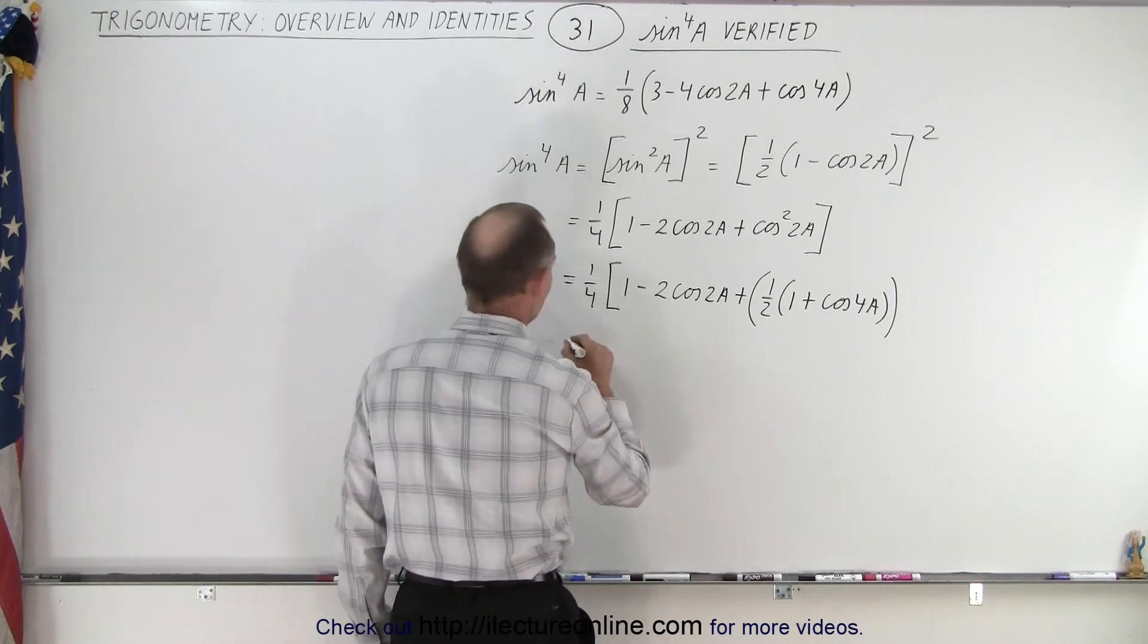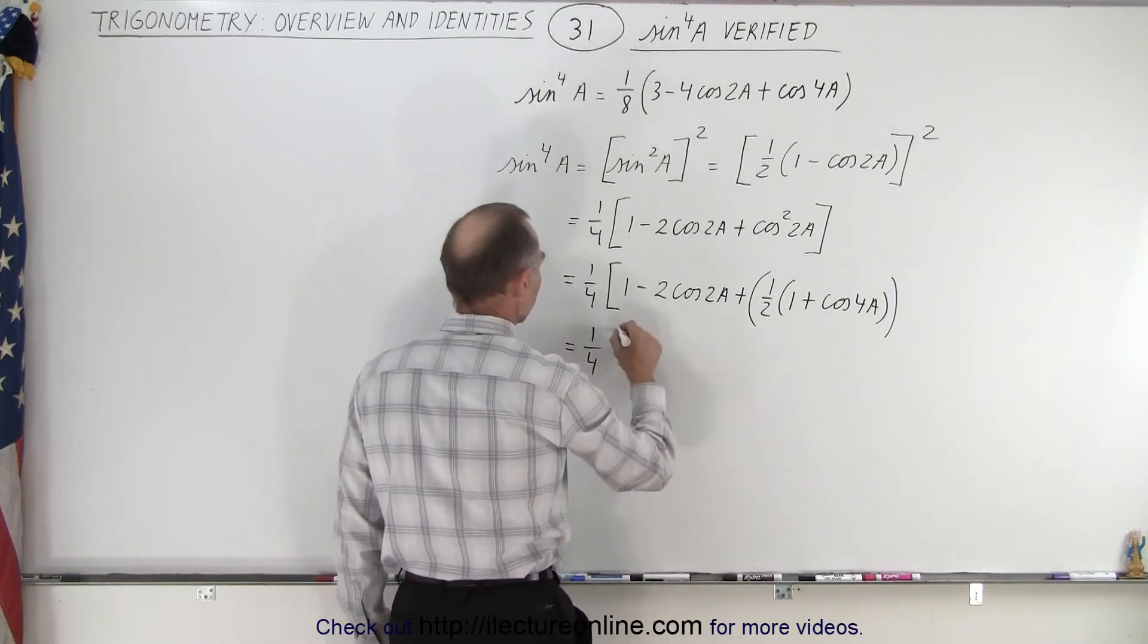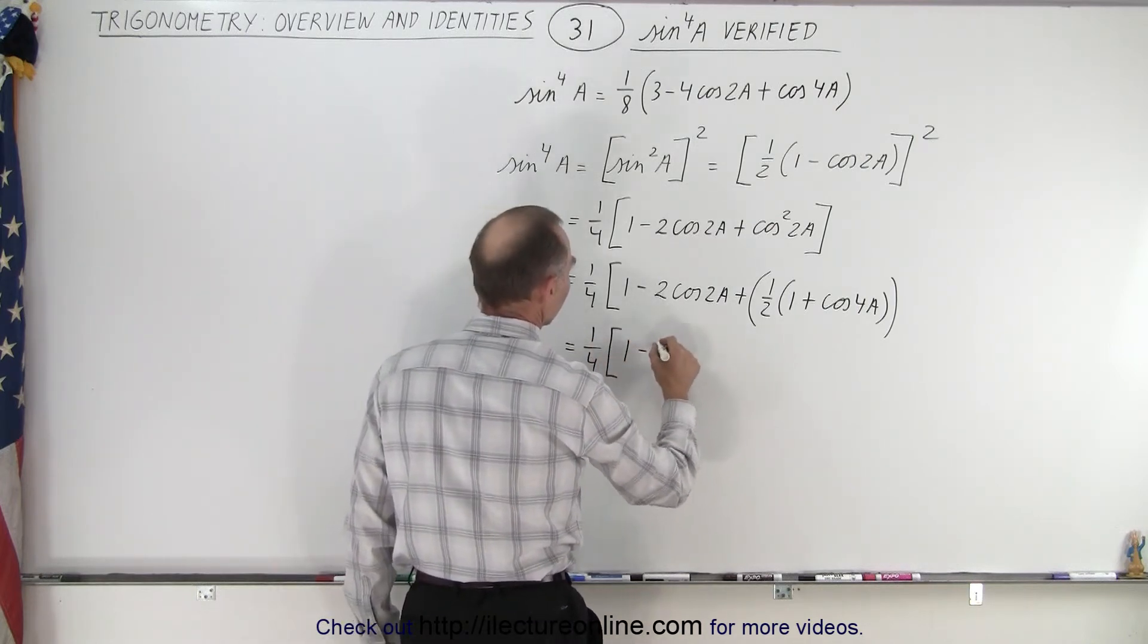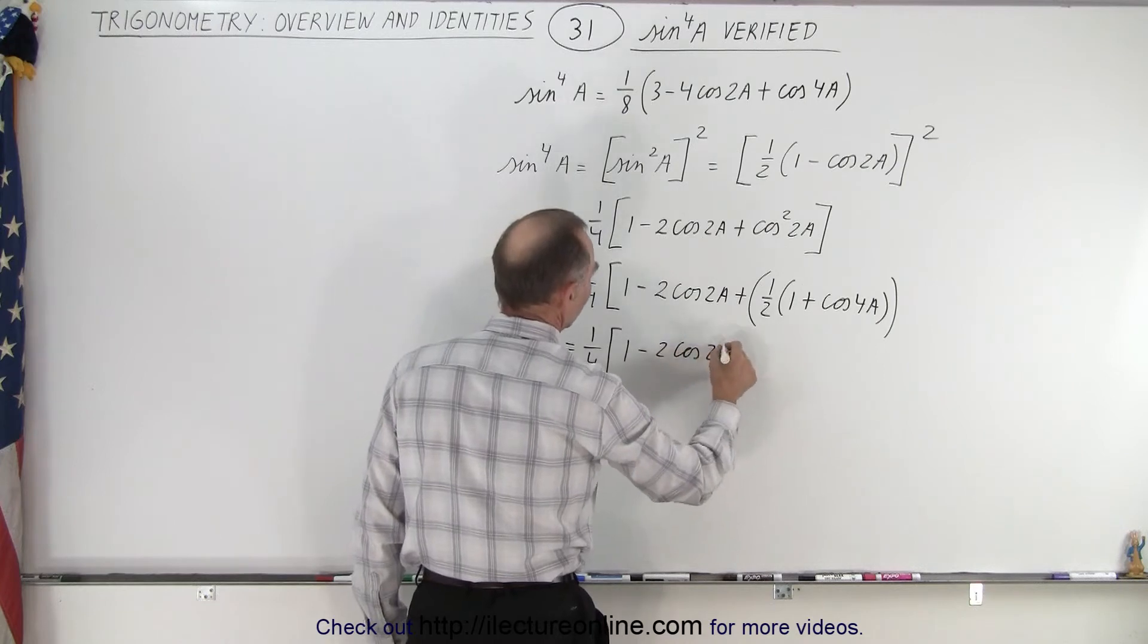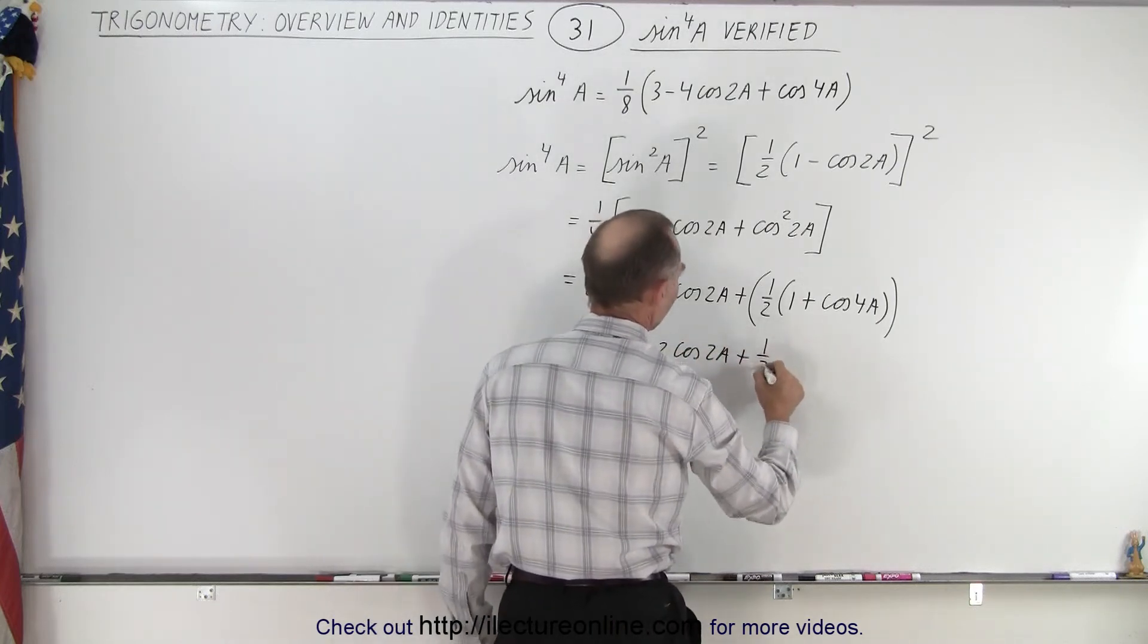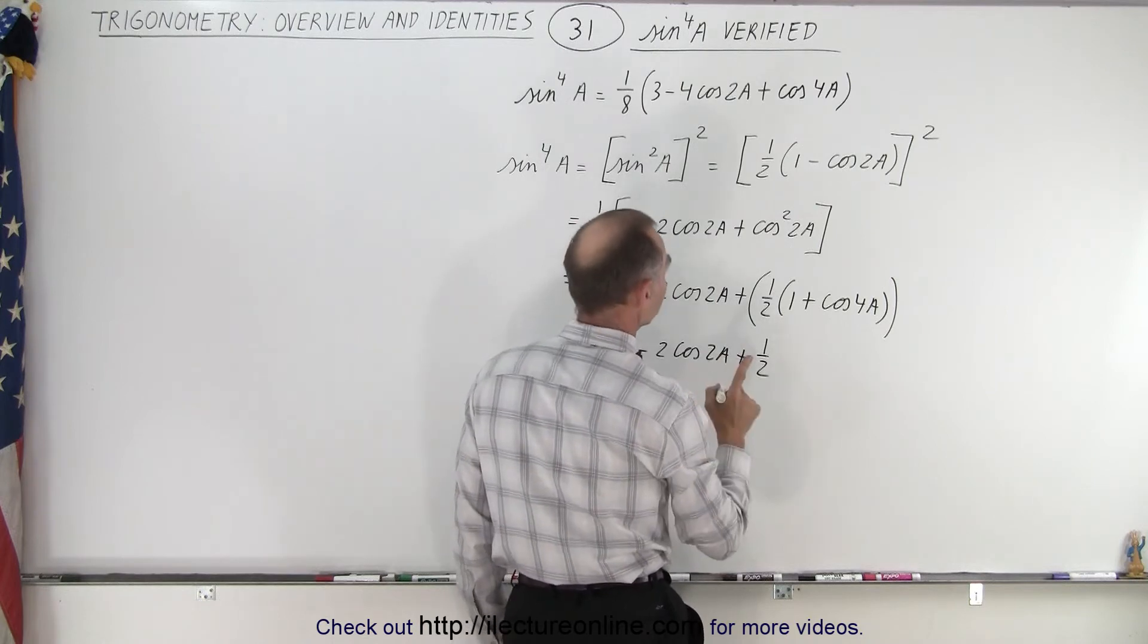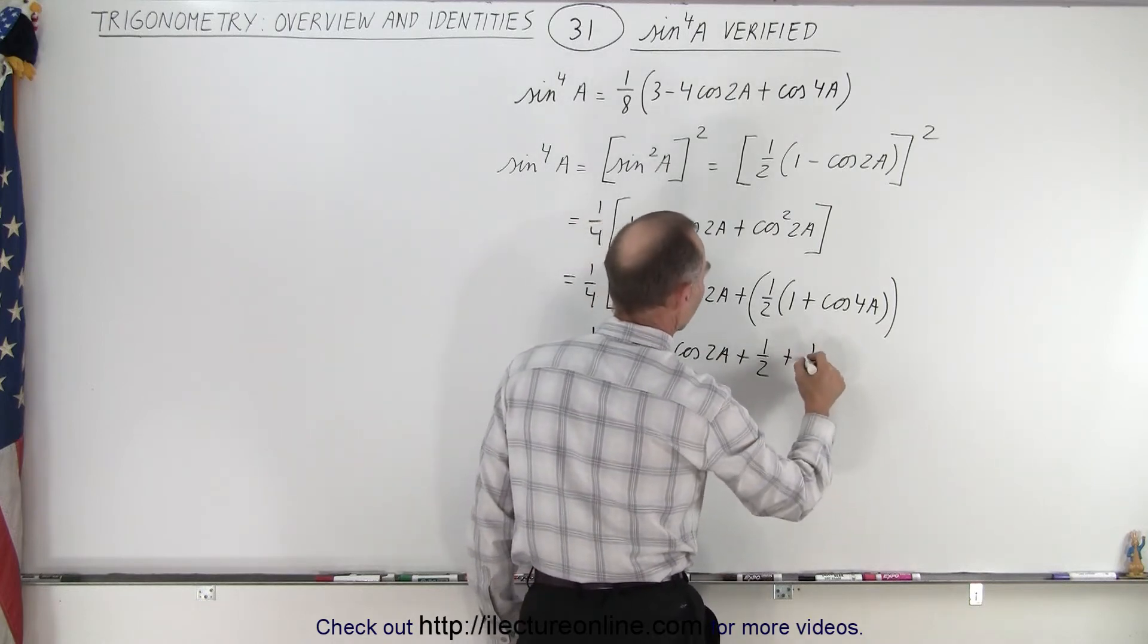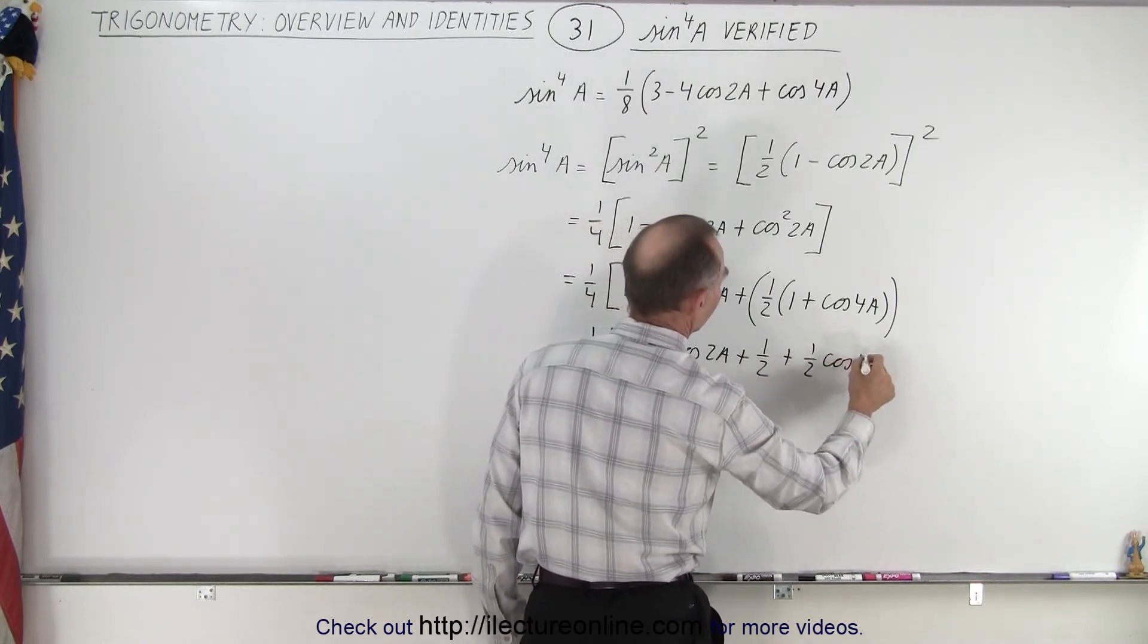So let's write this out now. So this is equal to 1/4 times 1 minus 2 times the cosine of 2a plus 1/2 plus 1/2 times the cosine of 4a.